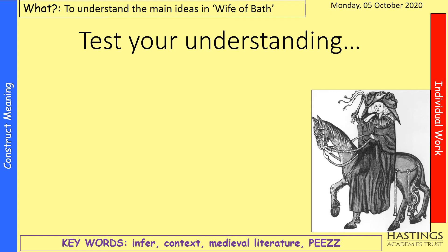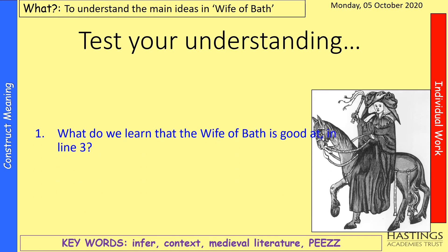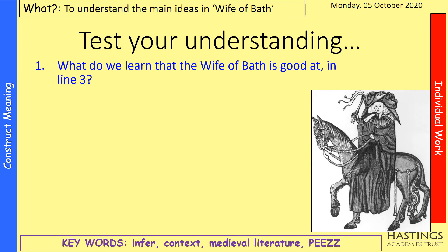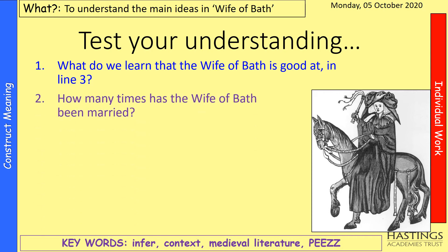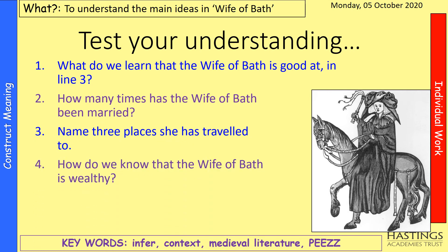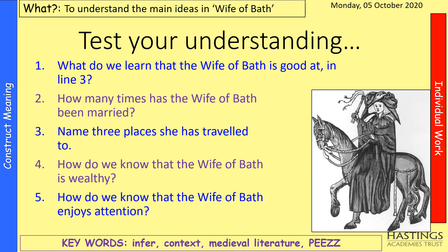You've read and hopefully understand the Wife of Bath — you may need to go back over it a few times, maybe even google the meaning of a couple of words. But once you've done that, to test your understanding, I've got a few questions. The first one is: what do we learn that the Wife of Bath is good at, in line three? How many times has the Wife of Bath been married? Name three places she's travelled to. How do we know that the Wife of Bath is wealthy? And how do we know that the Wife of Bath enjoys attention? Take five to ten minutes, pause the video now, and answer those five questions in your book. You can flip back through the video as many times as you like.